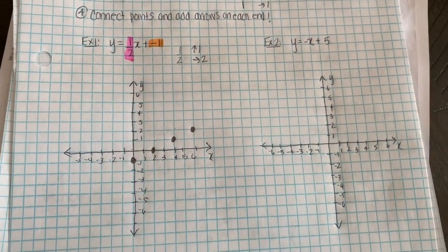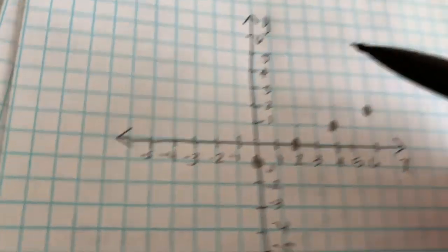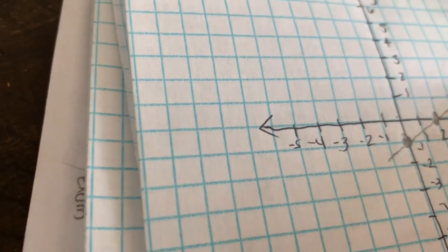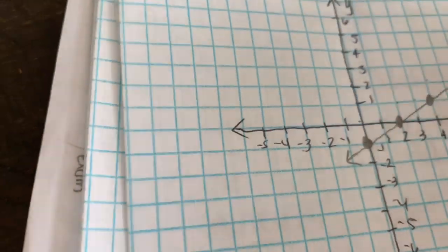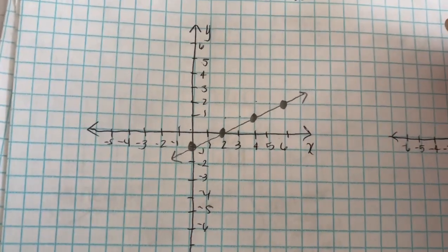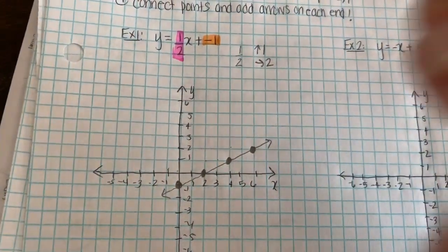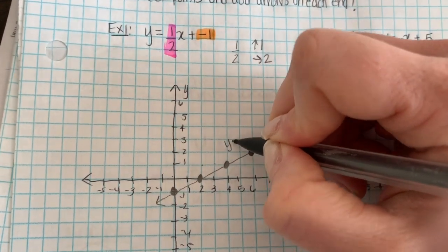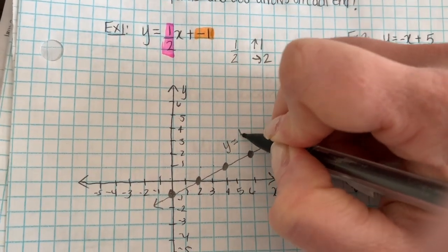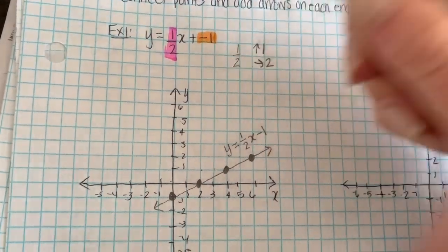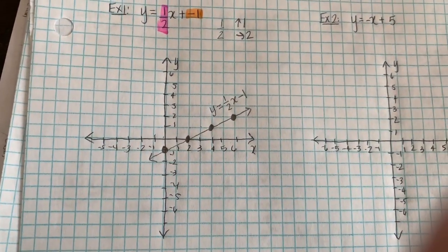And then you can connect the points. Extend the line a little bit and add arrows on either side. And to complete your graph, we should really label the line with its name, which is y equals 1 half x minus 1 or plus negative 1.